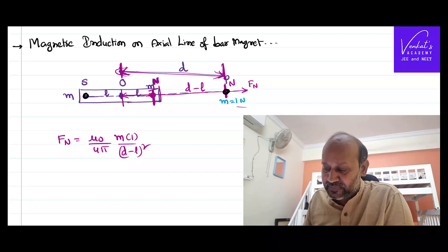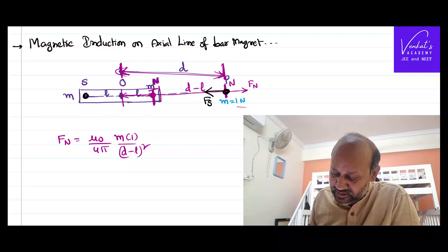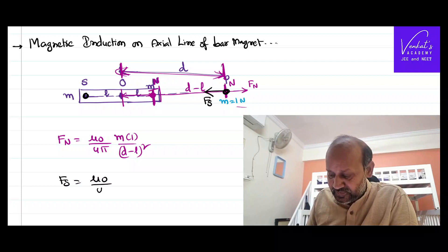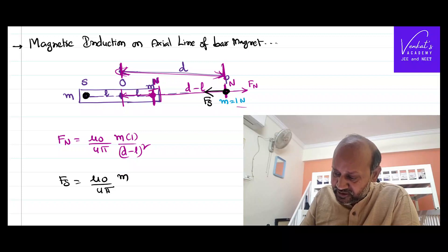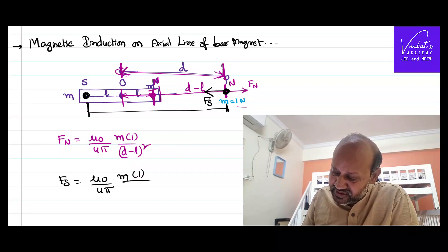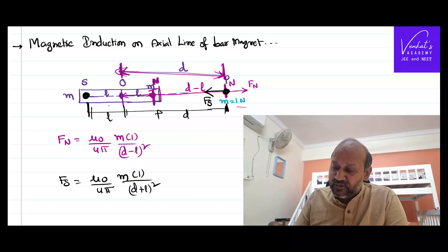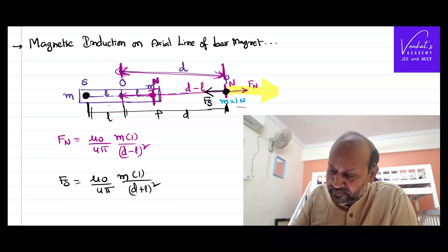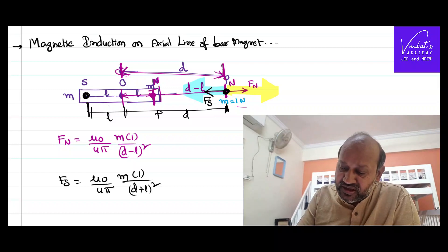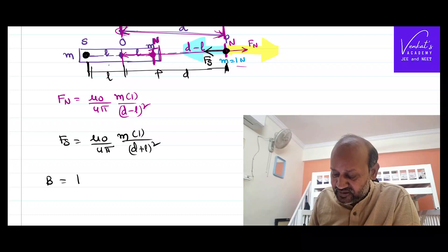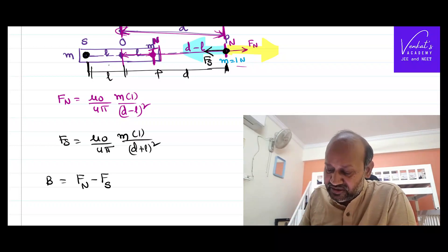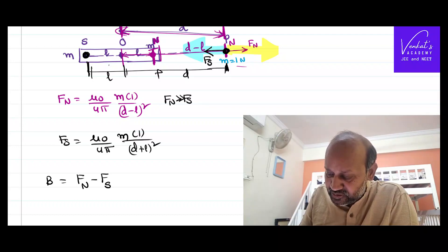Similarly, the south pole of the bar magnet applies a force of attraction on the unit north pole. That force is (μ₀/4π) × m × 1 / (d + l)², since the distance from the south pole to point P is (d + l). The force due to the north pole is directed away from the magnet, and the force due to the south pole is directed toward it — they are in opposite directions. Since (d − l) < (d + l), the force due to the north pole is larger.